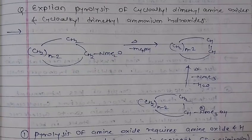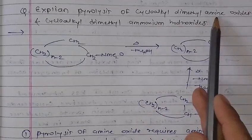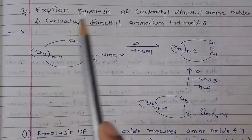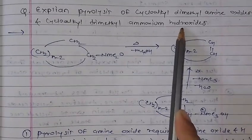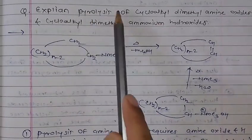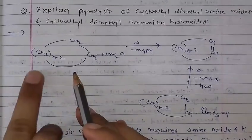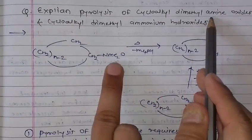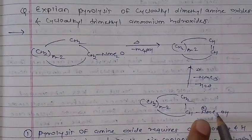We have a question about the pyrolysis of the cycloalkyl dimethylamine oxide. What is cycloalkyl trimethylammonium hydroxide? Explain the pyrolysis of the cycloalkyl dimethylamine oxide. It is a semi-norbornyl acid and an acetic acid. It is a trimethyl hydroxide.